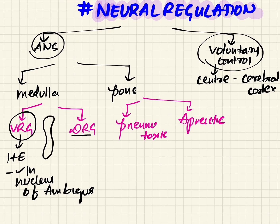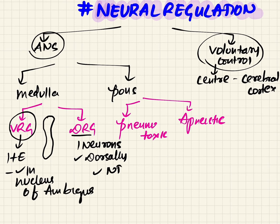The dorsal respiratory group has only I neurons. As the name suggests, it is present in the nucleus tractus solitarius. Unlike the VRG, it is not an elongated structure — it is just a normal center.